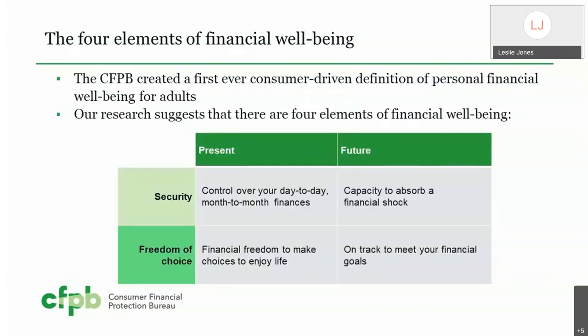There are four elements of financial well-being: having control over your day-to-day and month-to-month finances; having a capacity to absorb a financial shock; having the financial freedom to make choices and enjoy your life; and being on track to meet your financial goals. In 2019, a study discovered that 40% of Americans could not afford a $400 emergency. The Bureau thought that was very important, and then 2020 happened, making it even more critical to help people obtain financial well-being and have capacity to absorb a financial shock.